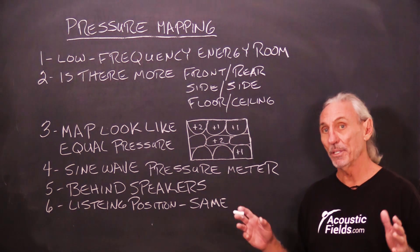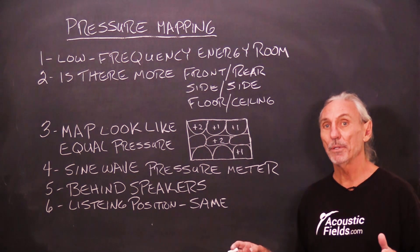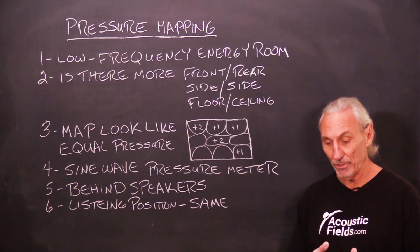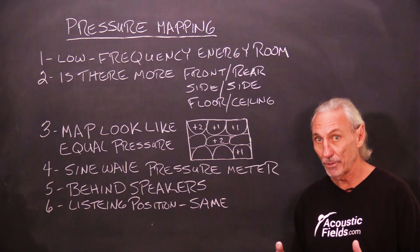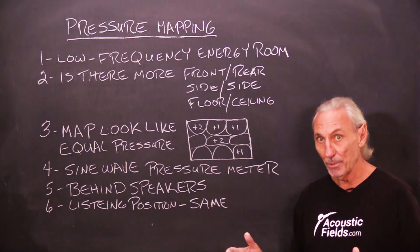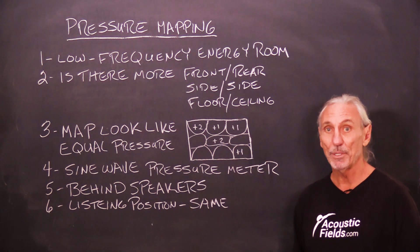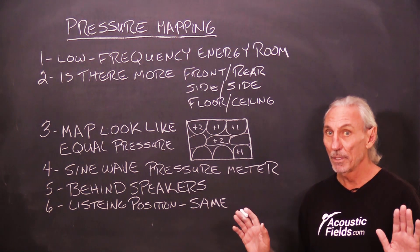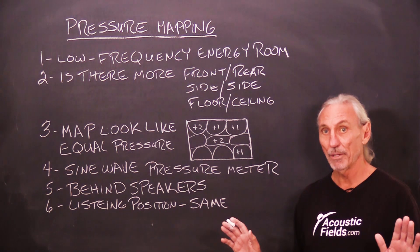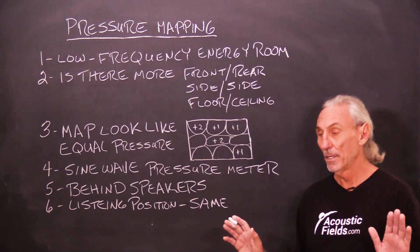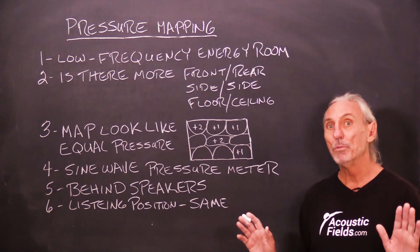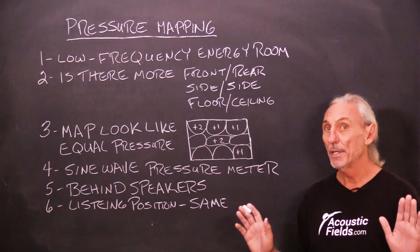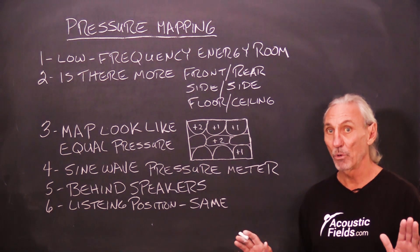We all know from past videos that the dimensions of the room are really important. Axial, tangential, and oblique modes. Axial modes are between two parallel surfaces. Tangential are between four and oblique are between six. The definition is two parallel wall surfaces producing the axial modal unwanted pressure — not two parallel corners.